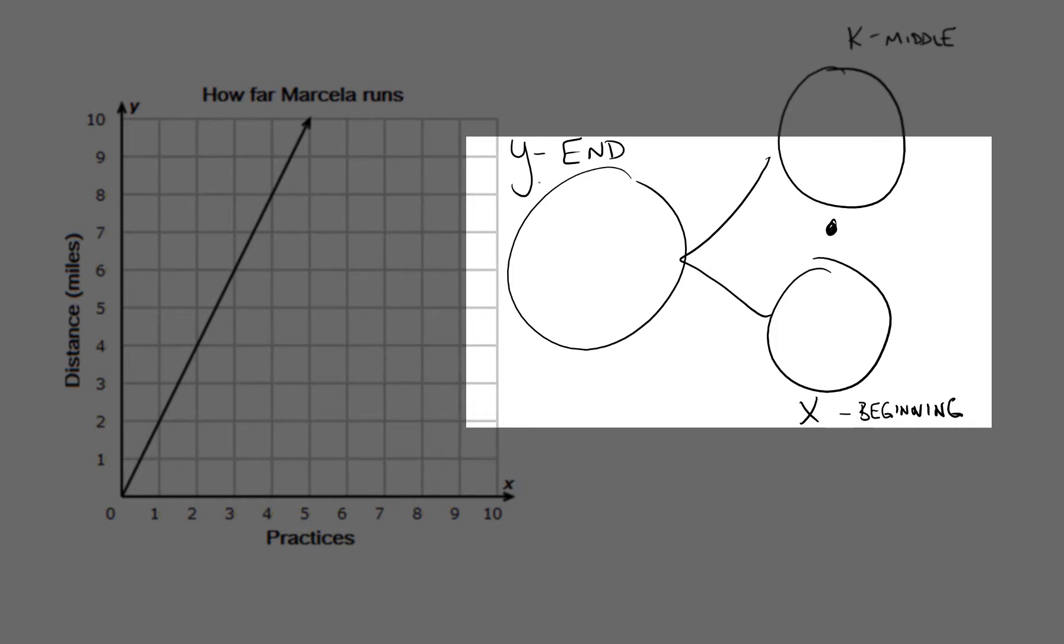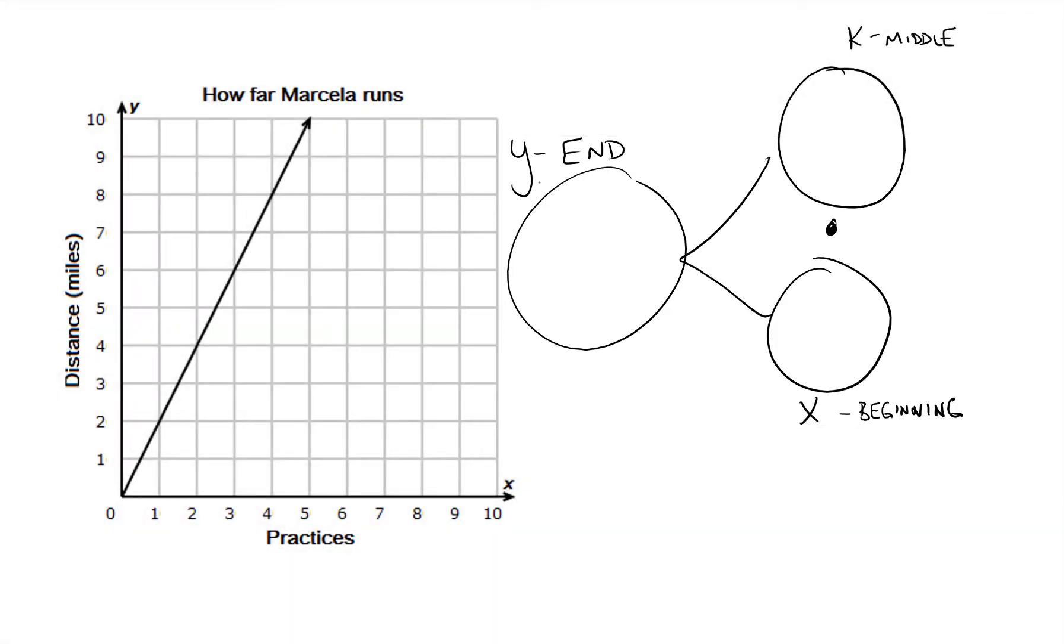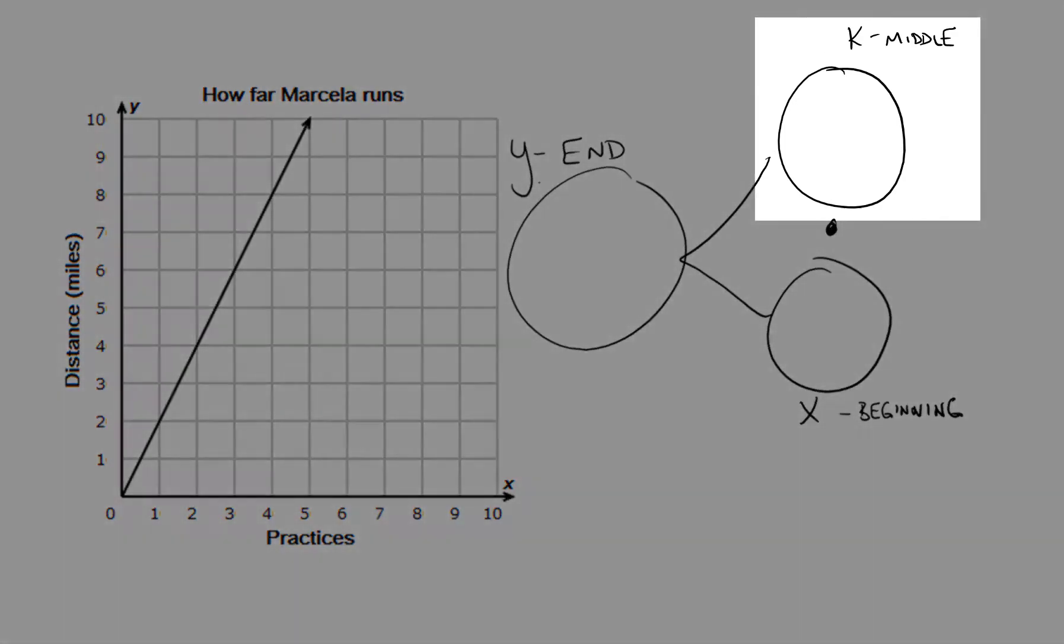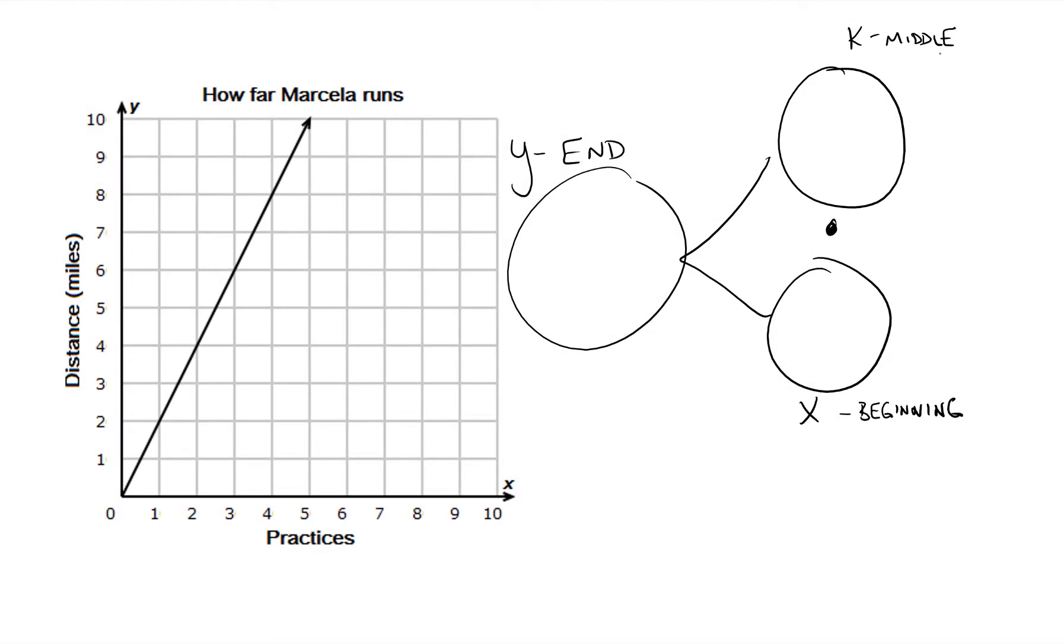Each piece of our story is going to have a variable that goes with it. The beginning is our x variable, the end is our y variable because they can always change. The one thing that won't change is our constant, our k in the middle.